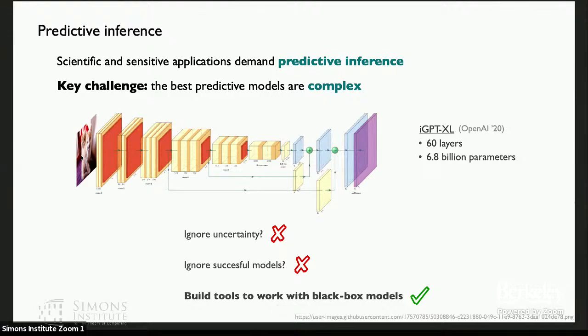So what we're going to do in this talk is we're going to build a set of tools that wrap around these black box models. You can think of something like cross-validation. It's kind of a meta procedure that goes on top of a black box model. And we're going to use that to get these statistical guarantees.